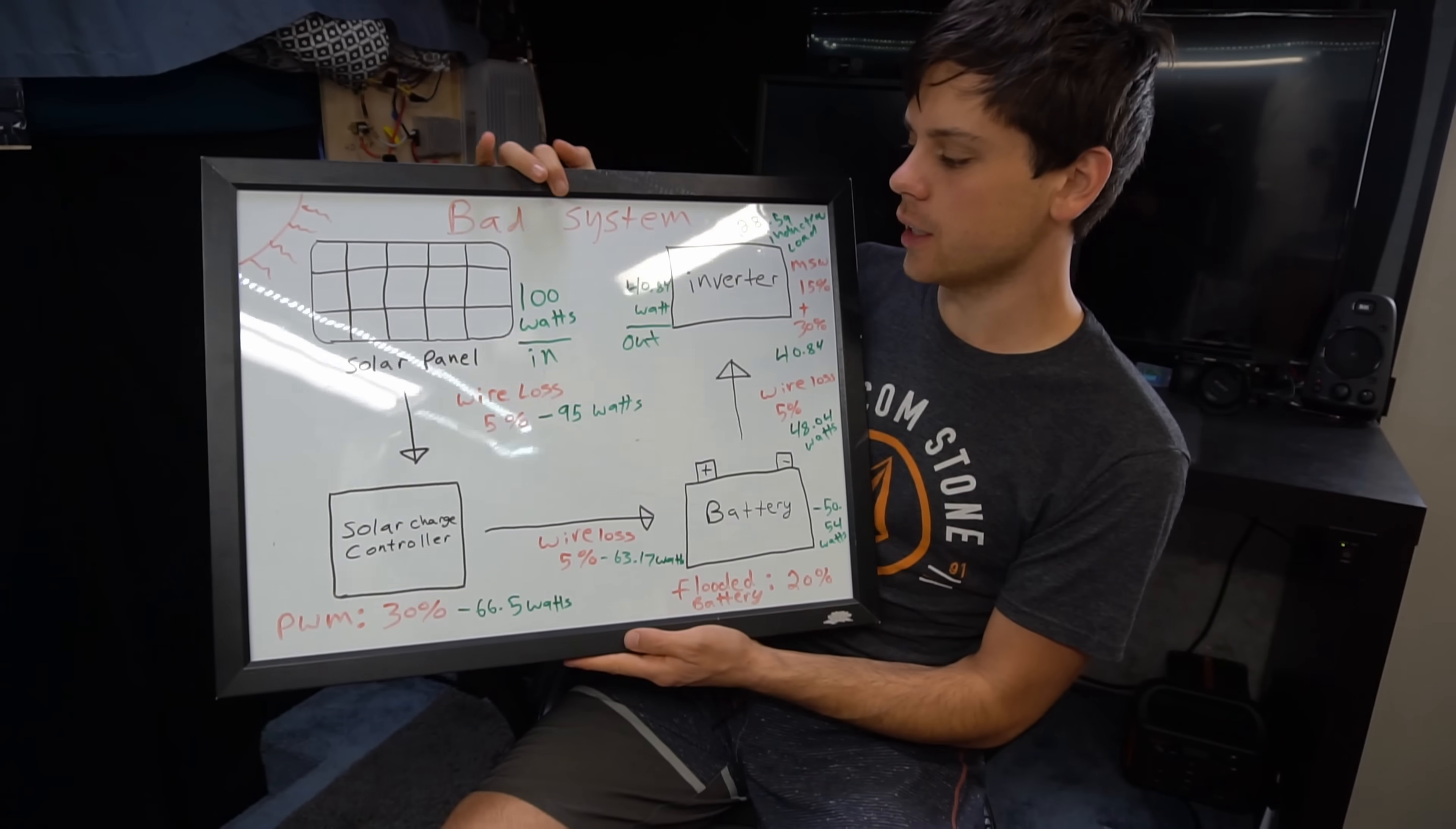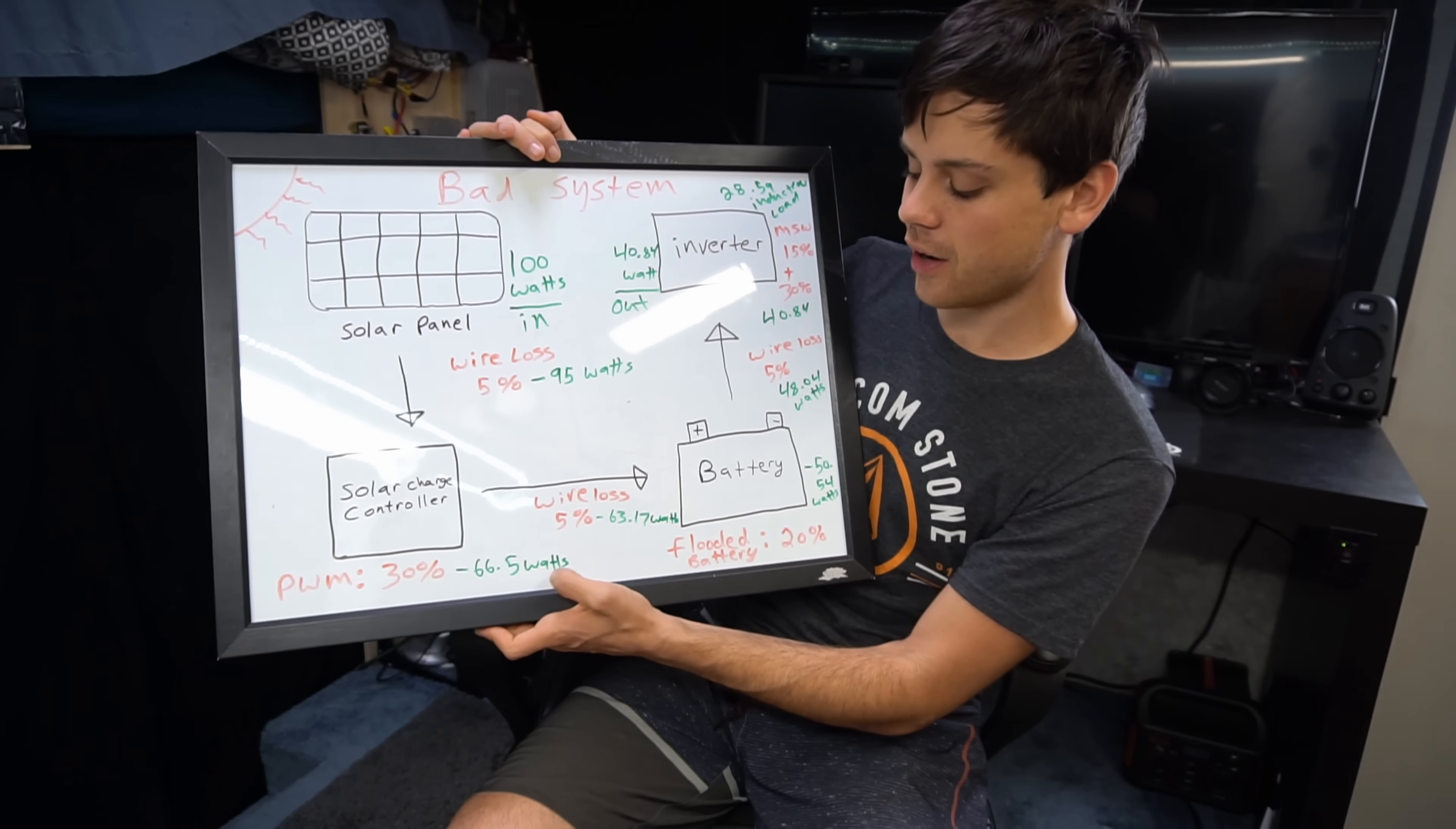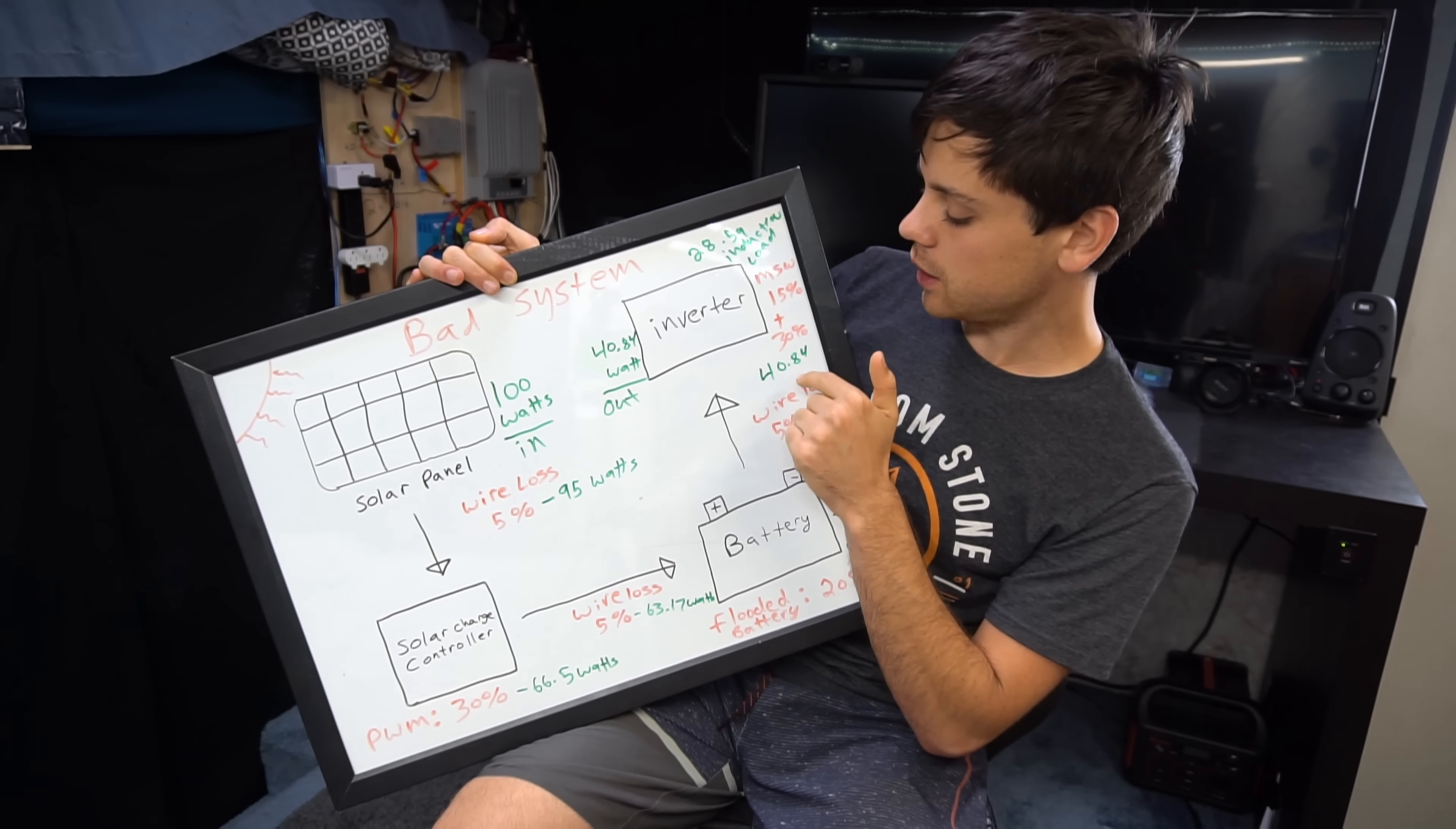All right guys I calculated all the numbers. If we have a wire loss of 5 percent between the solar panel and the controller you're down to 95 watts of potential power at that moment. Then the solar charge controller we have a 30 percent loss, 66.5 watts, then wire loss 63, then battery we get a 20 percent loss so now we're down to 50 watts, then the wire loss of 5 percent down to 48 watts, and then we get the modified sine wave inverter from China 15 percent loss, 40 watts.